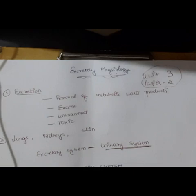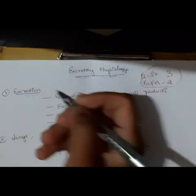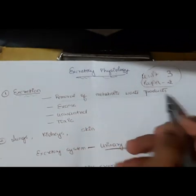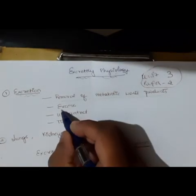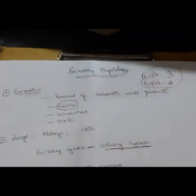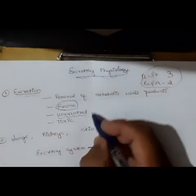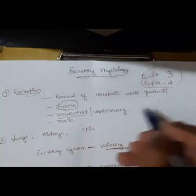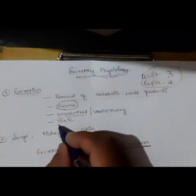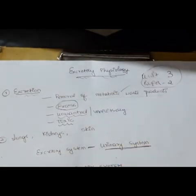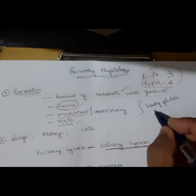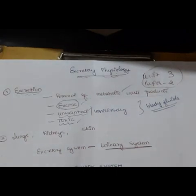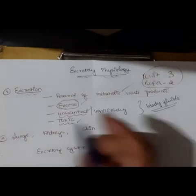To start with, what do you mean by excretion? Excretion in general means the removal of metabolic waste products that are formed inside the body during metabolic processes, or the removal of substances which are in excess, or the removal of all unwanted or unnecessary substances, or any toxic materials from the body. It is the removal of all waste products — excess, unwanted, and toxic materials — especially from the body fluids, which is referred to as excretion.